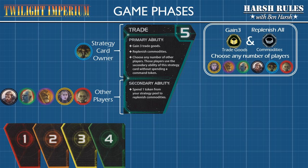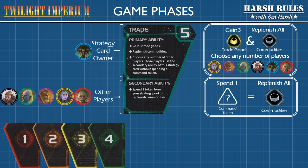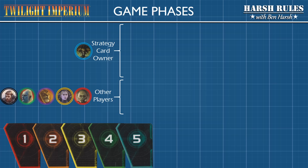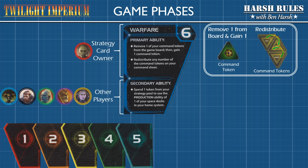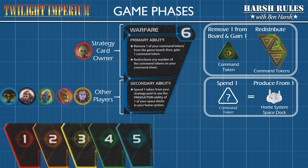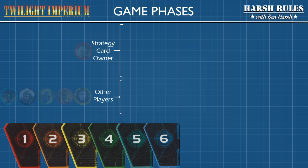Next is the Trade strategy card. The owner of this card gains three trade goods and replenishes all of their commodities. They can also choose any number of other players, and those players can take advantage of the secondary ability at no cost of command token. For the secondary ability, players can spend one of their command tokens to replenish all of their commodities. Next is the Warfare strategy card. This card's owner can take one command token from the game board and return it to their command sheet. For the secondary ability, a player can spend a command token to use the production ability of the space dock in their home system.